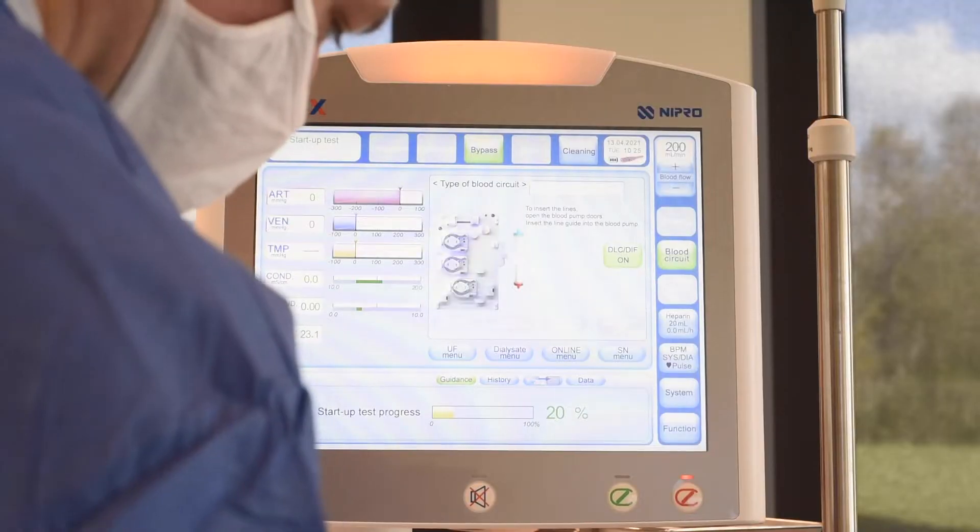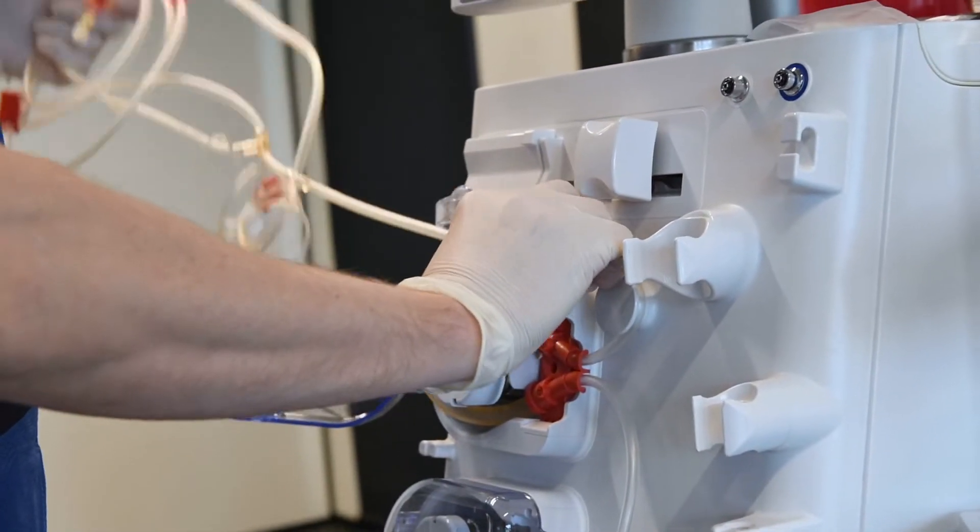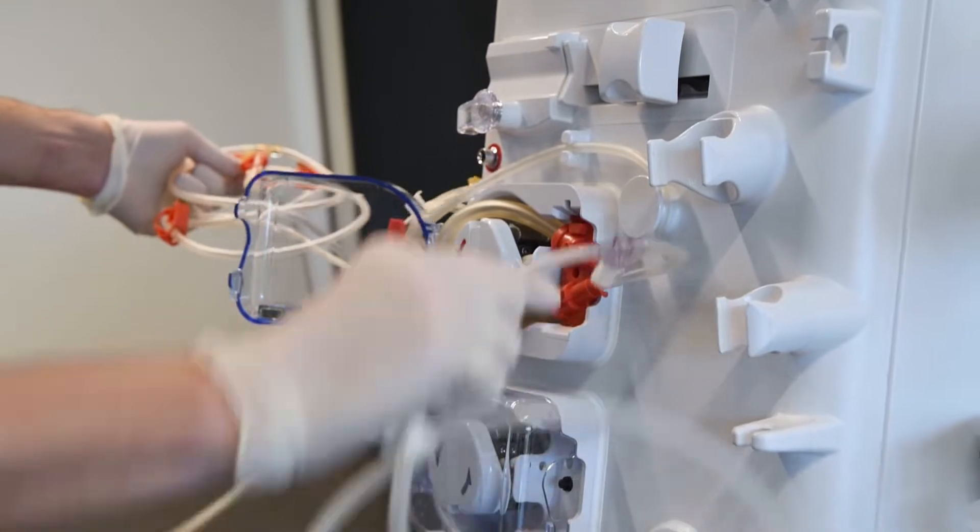Insert the arterial pump segment bottom first and click the top into place until you feel the click and hear the sound. On the screen, the setup for a standard bloodline will appear.